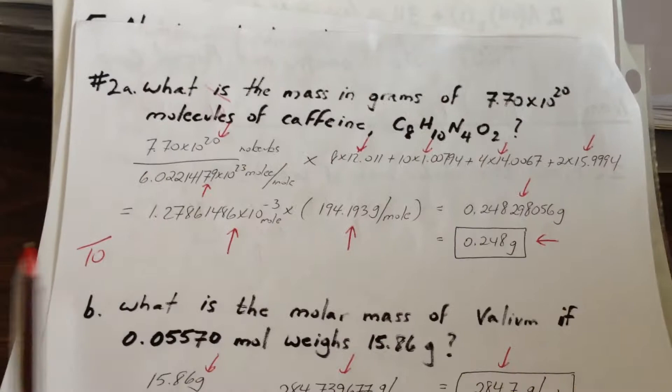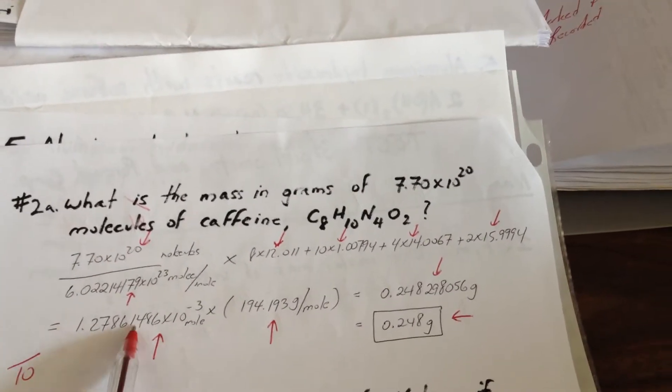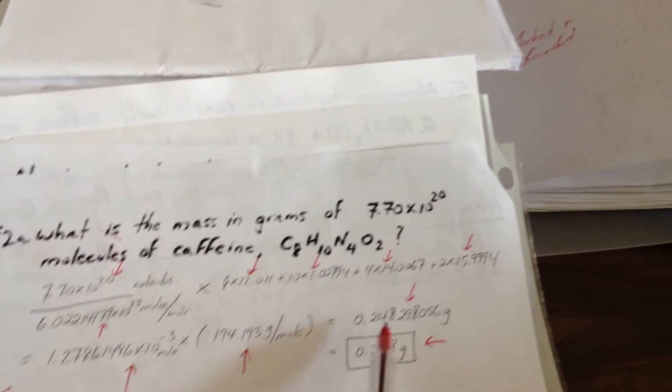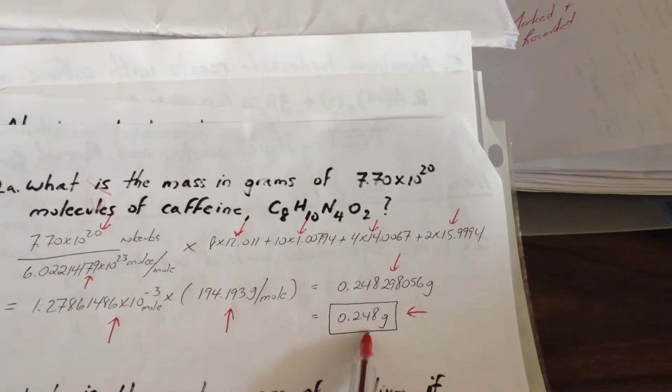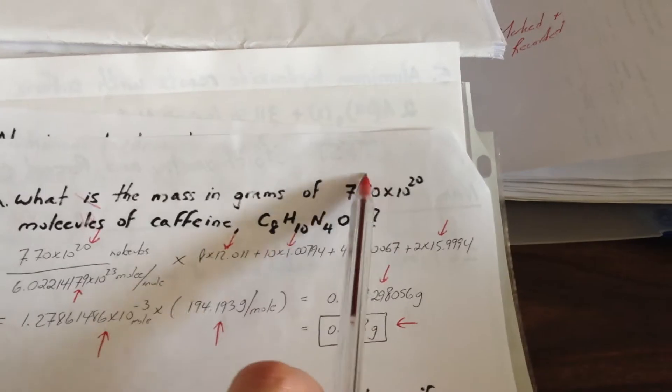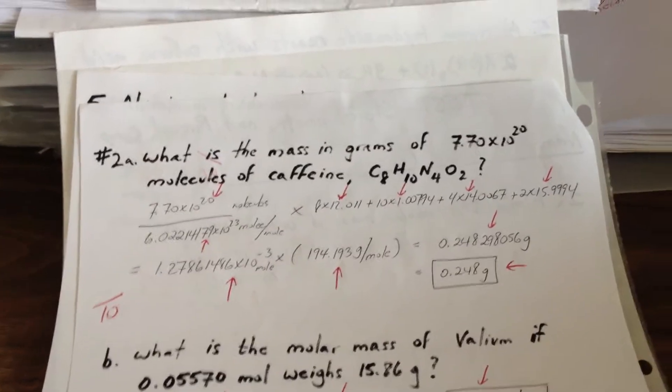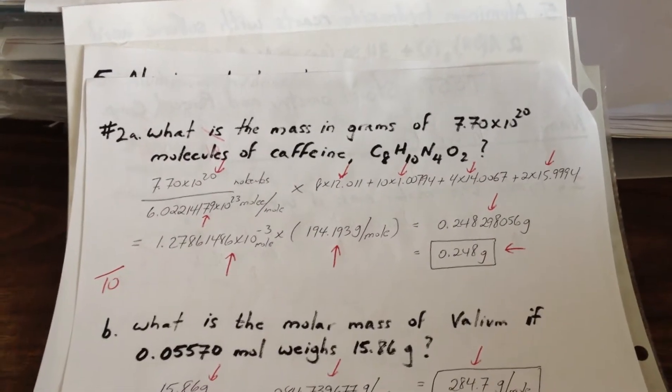And that gives us that many moles from this number. That many moles times the molar mass gives us 0.248 grams. We're only allowed three significant figures because the question only has three significant figures. That was worth ten marks. Each one of the arrows points to what I'm looking for as an element in each one of the questions.